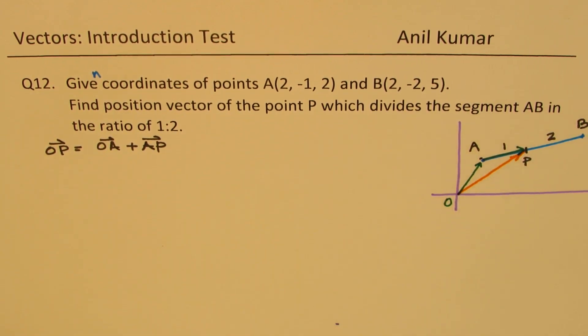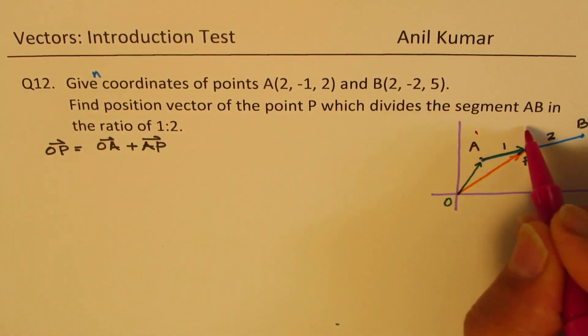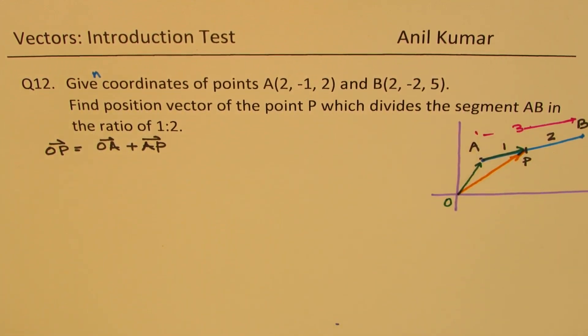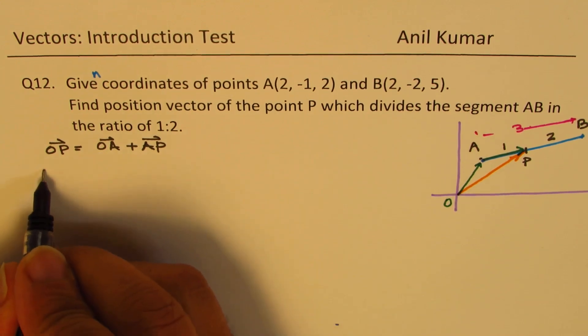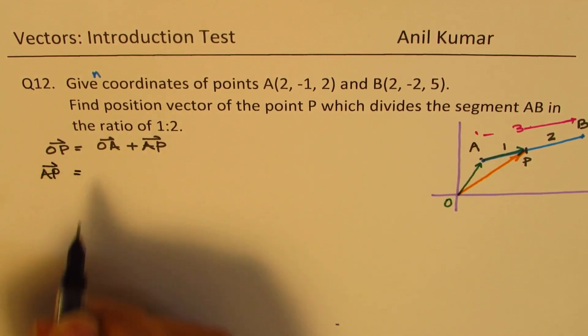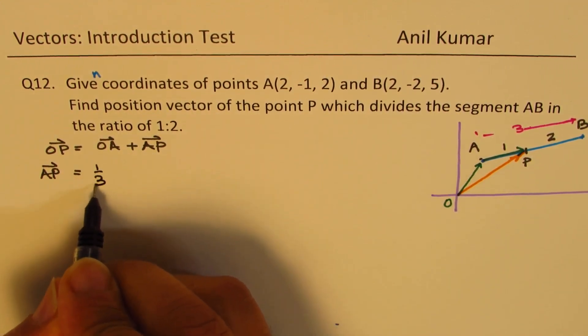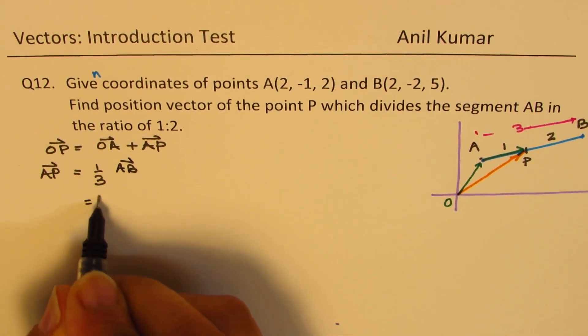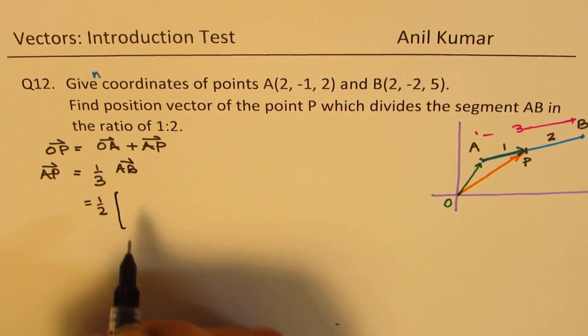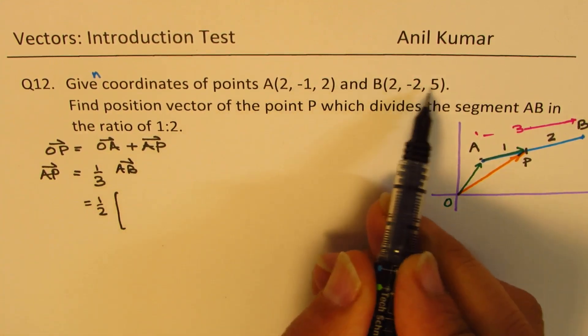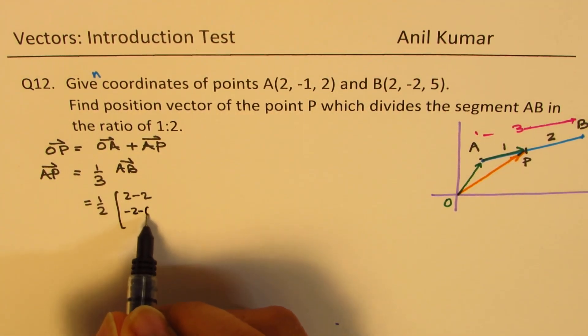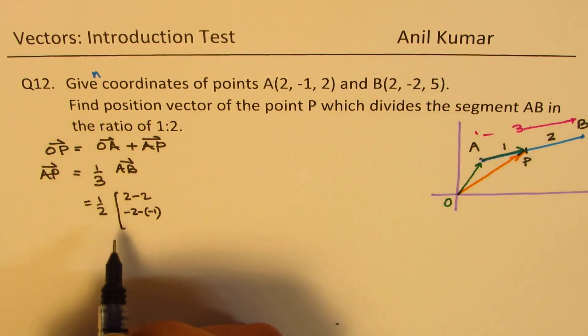AB, if we have this as three units, then with the ratio 1 is to 2, we can say that AP is basically one-third of AB. These are the coordinates: 2 minus 2, minus 2 minus 1, 5 minus 2.